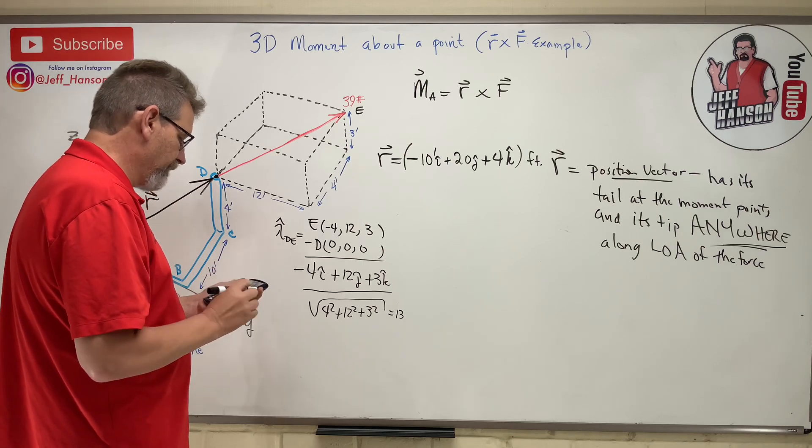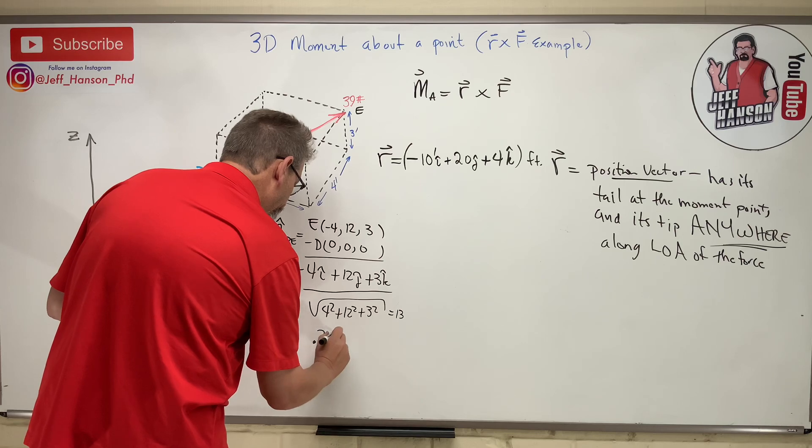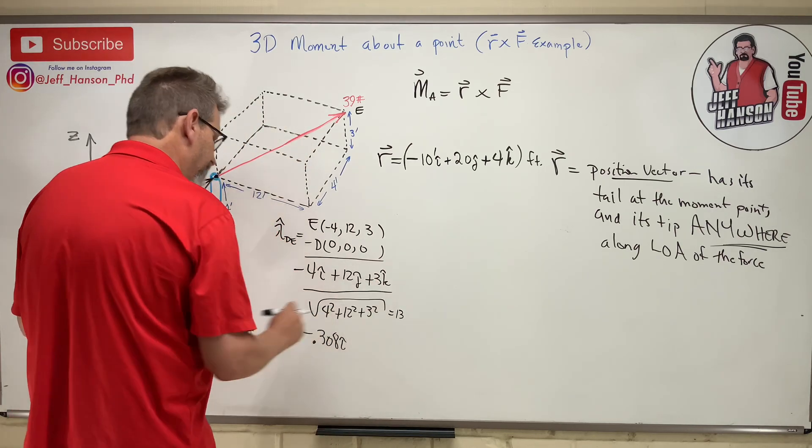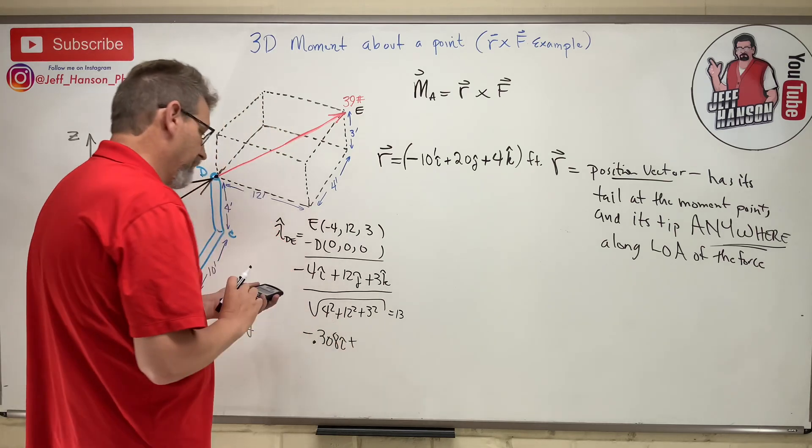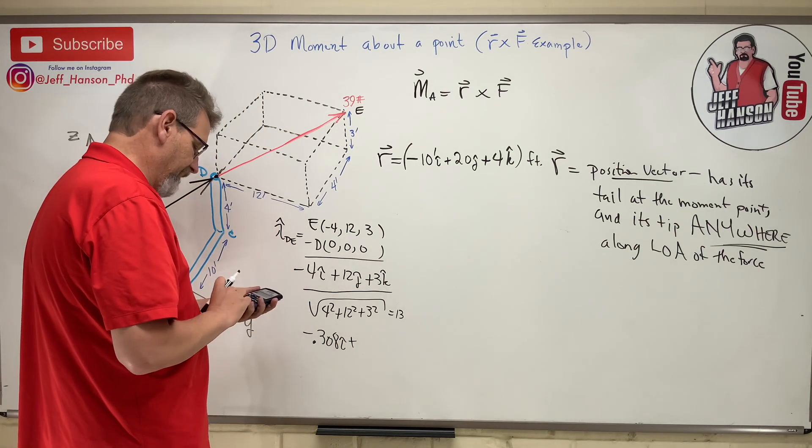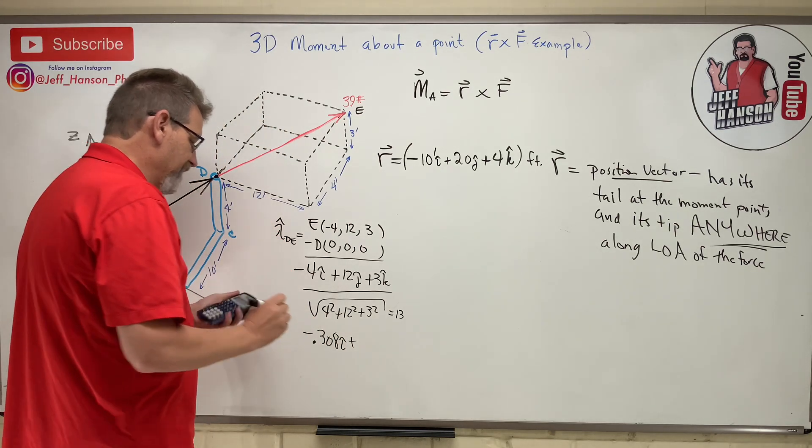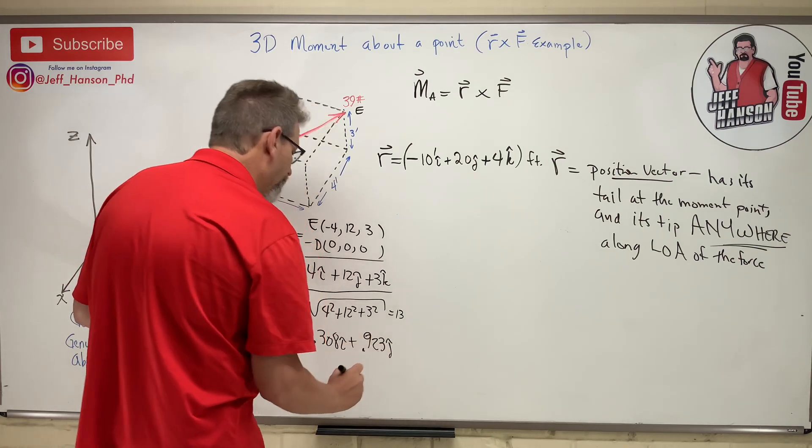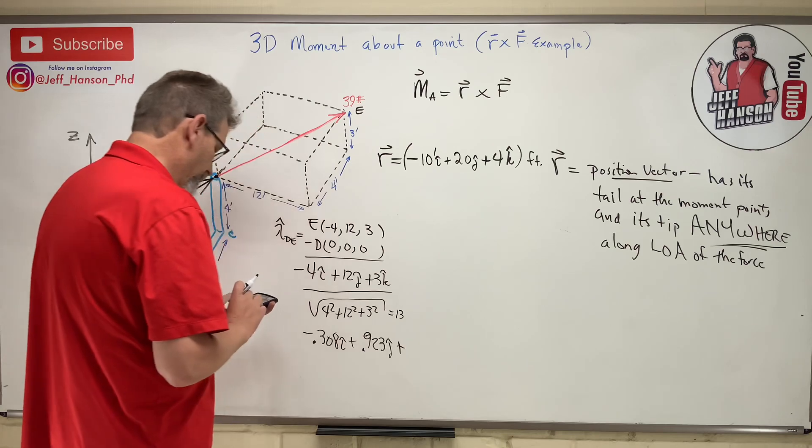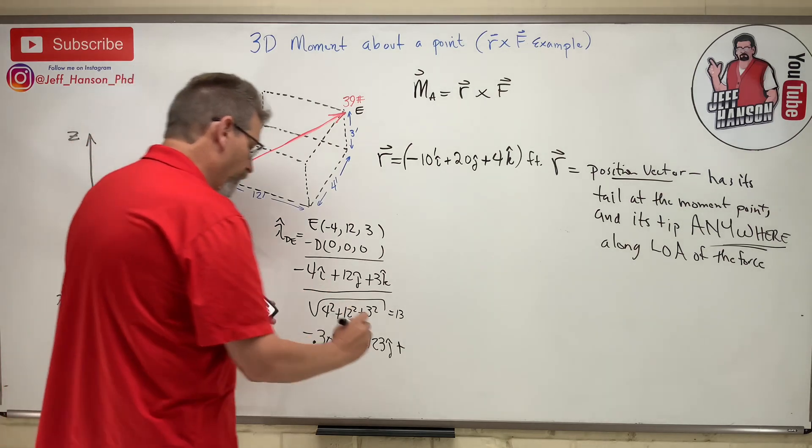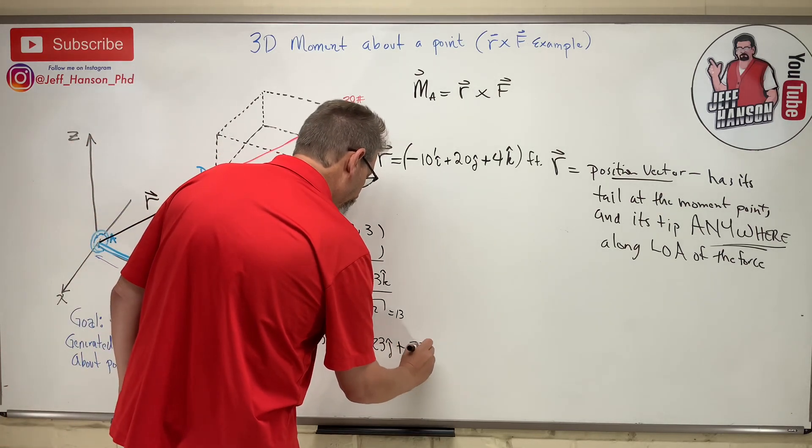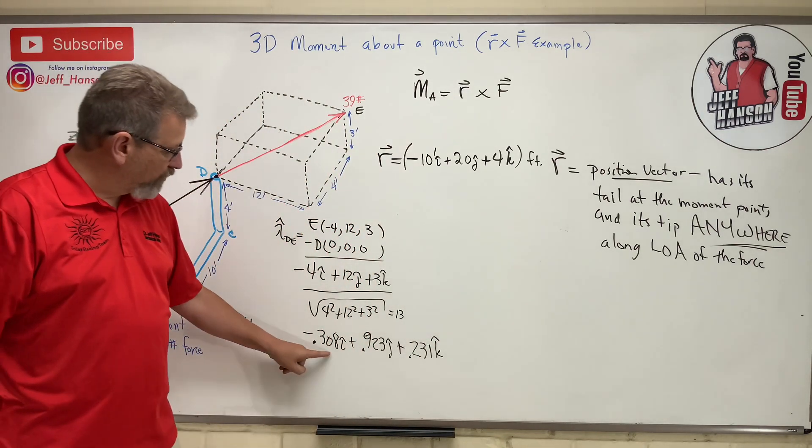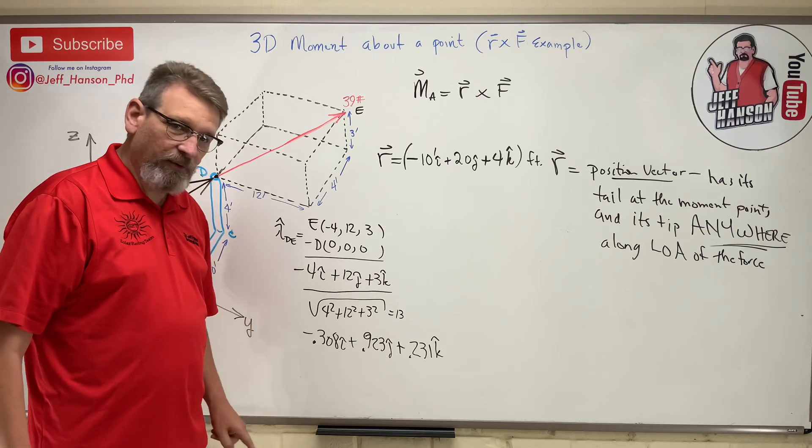So my lambda vector is negative 4 divided by 13, 0.308. That's negative, it's going to be negative positive positive. Plus 12 divided by 13, 0.923. And then plus 3 divided by 13, 0.231. And we can check ourselves, square it square it square it, take square root, you should get one.